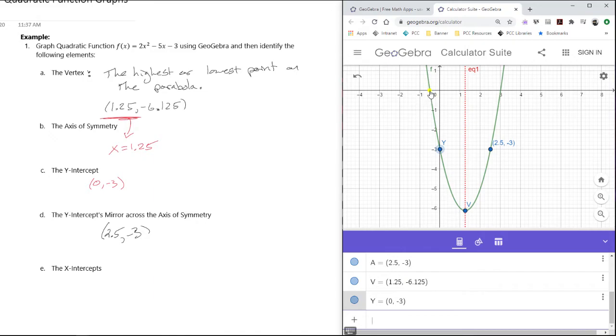We need the x-intercepts. So let's take a look here. By just looking on the graph where it crosses the x-axis, I get these dots popping up. I see that one of them is at (-0.5, 0) and the other is at (3, 0). So I'll write these down: (-0.5, 0) and (3, 0).